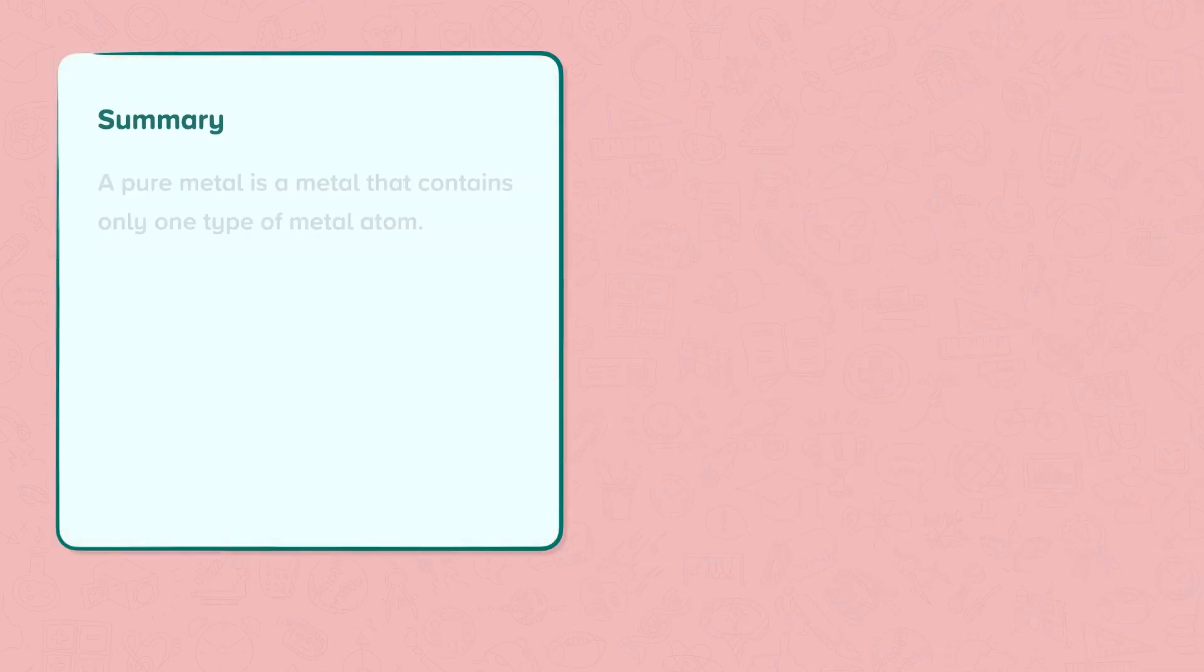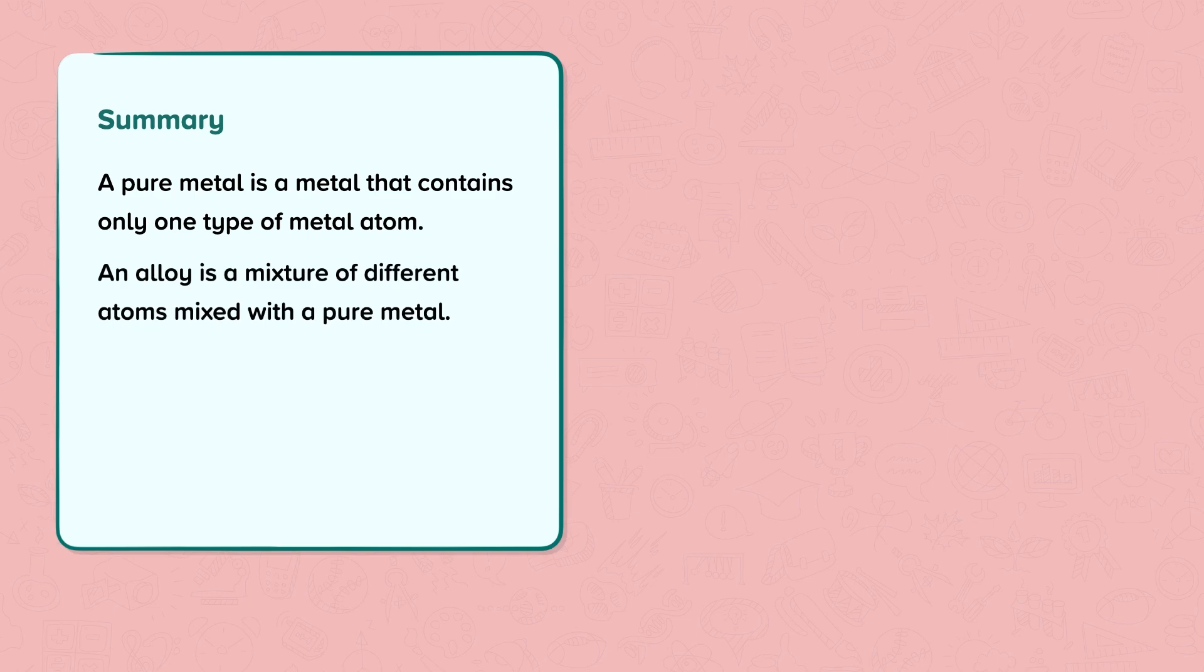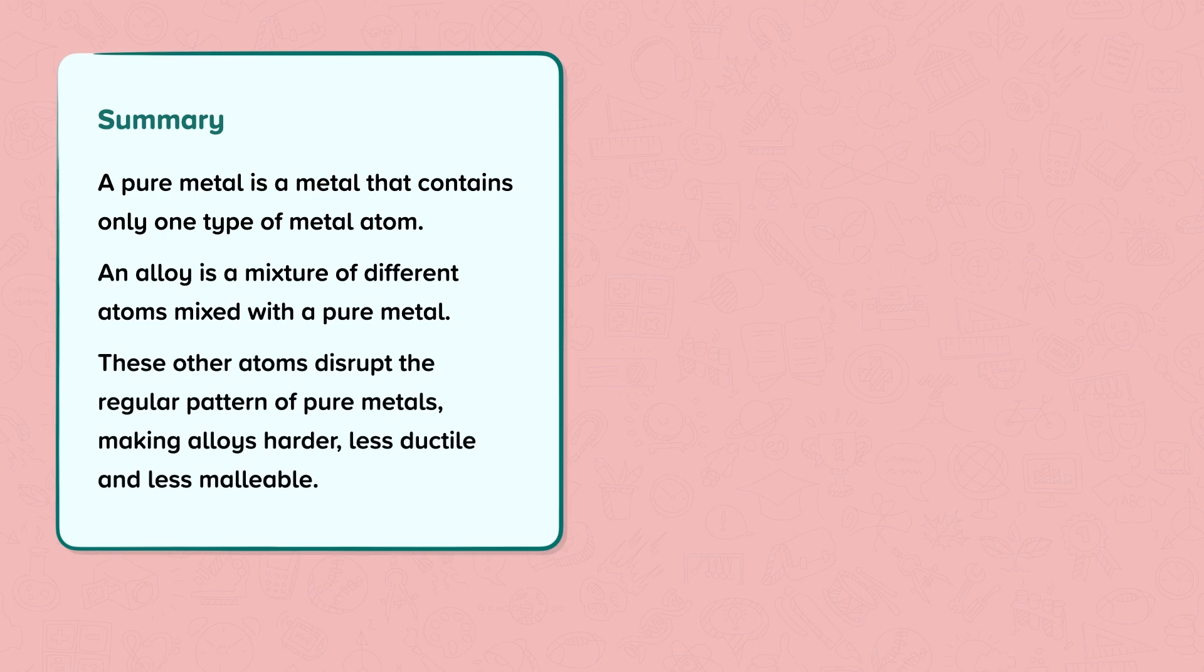Summary. A pure metal is a metal that contains only one type of metal atom. An alloy is a mixture of different atoms mixed with a pure metal. These other atoms disrupt the regular pattern of pure metals, making alloys harder, less ductile and less malleable.